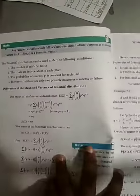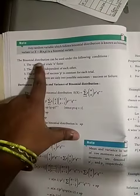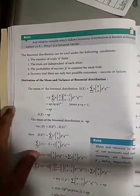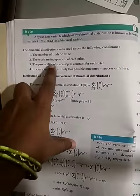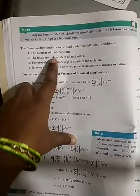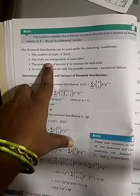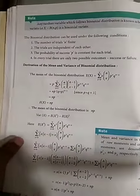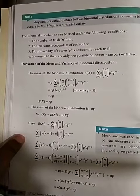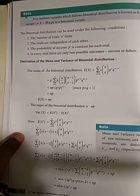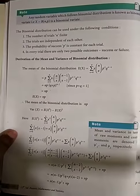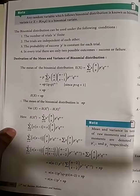We are going to see the conditions under which this distribution can be applied. First, n should be finite — that is, the number of trials should be finite. Then the trials should be independent of each other, meaning they should not depend on the previous trial. The probability of success p is constant, and at every trial there are only 2 possible outcomes.